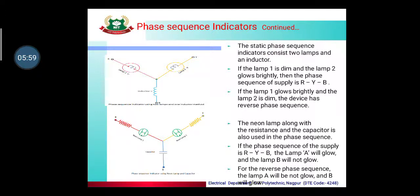The static type phase sequence indicator has no rotating parts — it remains stationary. It consists of two lamps and an inductor. Two lamps are connected to two phases and an inductor is connected to the third phase. If lamp one is dim and lamp two glows brightly, then the phase sequence of the supply is R-Y-B (correct). If lamp one glows brightly and lamp two is dim, the phase sequence is reversed.